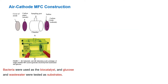Next, we discuss air cathode microbial fuel cell construction. The microbial fuel cells consisted of an anode and cathode placed on opposite sides in a plastic chamber. The anode electrodes were made of carbon paper. The carbon-electrode proton exchange membrane cathode was manufactured by bonding the proton exchange membrane directly onto a carbon cloth electrode. In this experiment, bacteria present in domestic wastewater were used as the biocatalyst, and glucose and wastewater were tested as substrates.